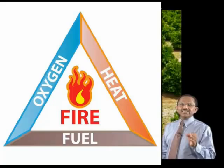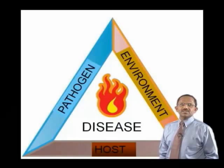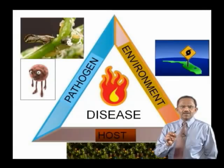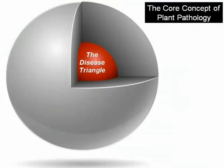A fire starts when oxygen, heat and fuel are combined. A different kind of fire — plant disease — occurs when a pathogen meets a host plant at the right environment. Plant pathologists call this the disease triangle, and it is the core concept of the science of plant pathology.